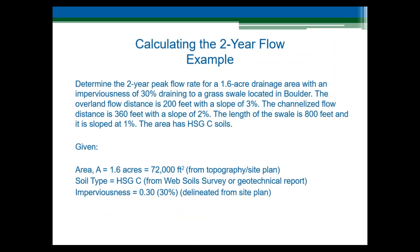Now for our example. Our goal is to calculate the two-year peak flow rate for a 1.6-acre drainage area that leads to a grass swale. The drainage area has an imperviousness of 30%, or 0.3. The overland flow distance is 200 feet with a longitudinal slope of 3%, or 0.03. The channelized flow distance is 360 feet with a slope of 2%, or 0.02. We will assume hydrologic soil group C from the Web Soil Survey.